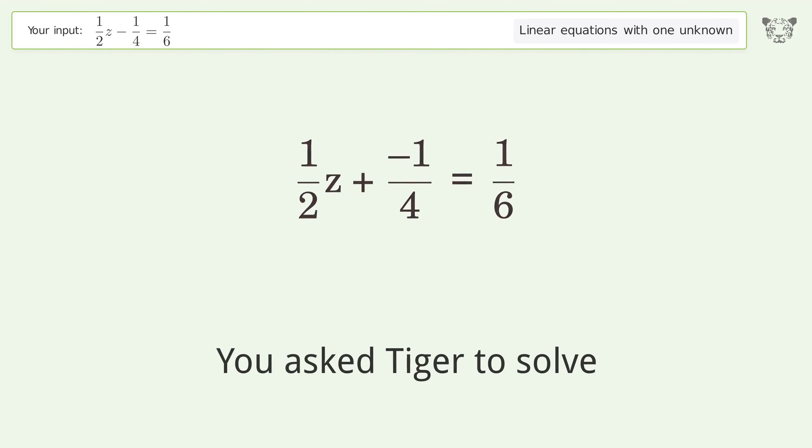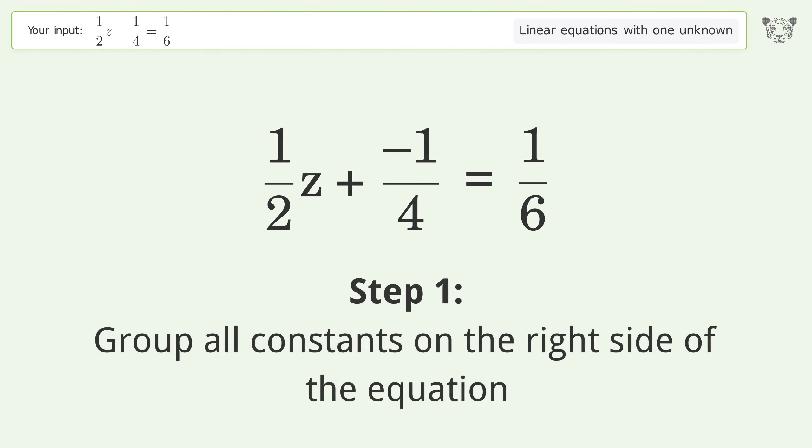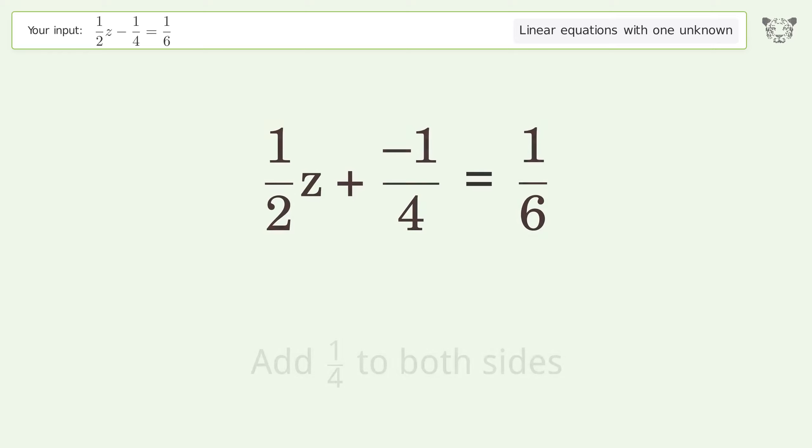You asked Tiger to solve this problem dealing with linear equations with one unknown. The final result is z equals 5 over 6. Let's solve it step by step. Group all constants on the right side of the equation. Add 1 over 4 to both sides.